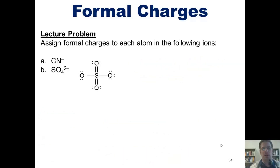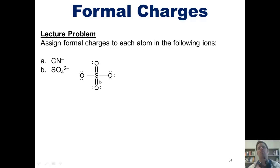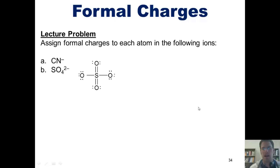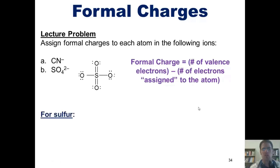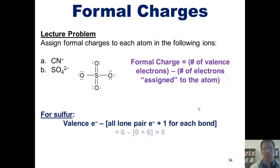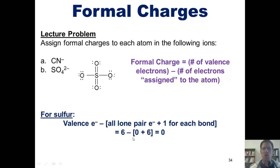Some of you might have noticed that there's a different Lewis structure I can draw for sulfate. You'll note that this sulfur atom in this Lewis structure has more than an octet. Because sulfur is in row three of the periodic table or below, that can actually happen. For sulfur in this Lewis structure, the number of valence electrons is six, the number of lone pair electrons it has is zero — there are no dots around the sulfur — and it is experiencing six bonds. Thus, the overall formal charge for sulfur in this Lewis structure is equal to zero.